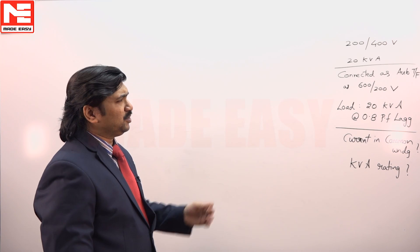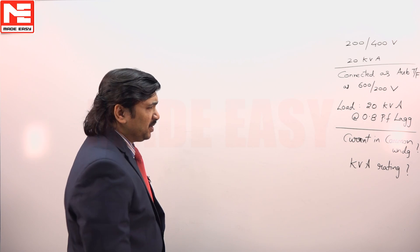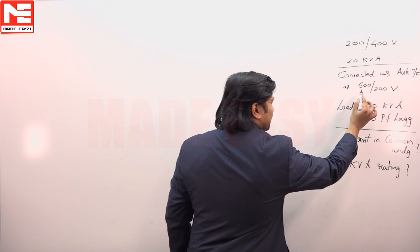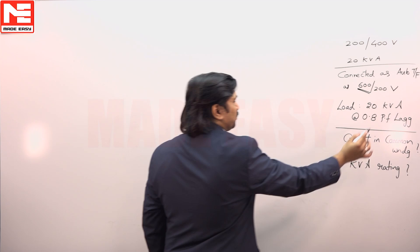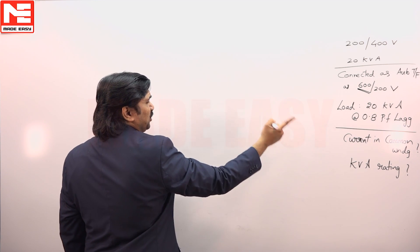It was given a two-winding transformer reconnected as an auto transformer, mentioned as 600 by 200 volts. So it's connected like this, then 600 by 200.